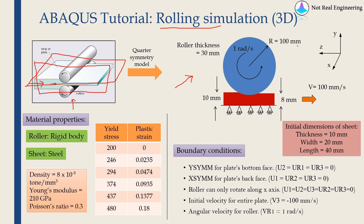We have a roller with radius 100 mm rotating with angular velocity of 1 radian per second. The initial sheet dimensions are: thickness 10 mm, width 20 mm, and length 40 mm. We are going to reduce the thickness from 10 mm to 8 mm. The sheet velocity is 100 mm per second, calculated so that the peripheral velocity of the roller matches this velocity — r times omega gives 100 times 1, which equals 100 mm per second.